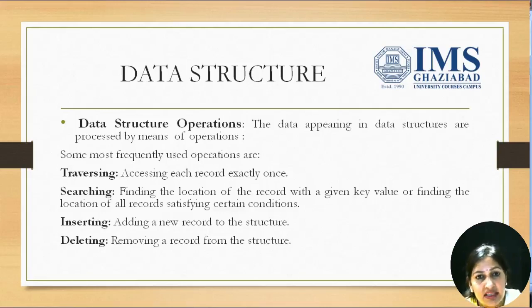Traversing means accessing all the elements exactly once, or we can say accessing each record exactly once. While accessing the record or the element, we can perform certain operations on that record.